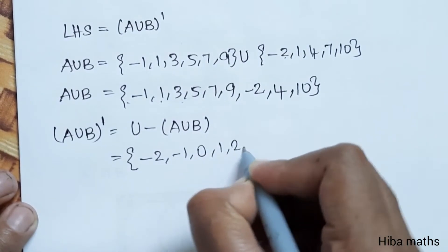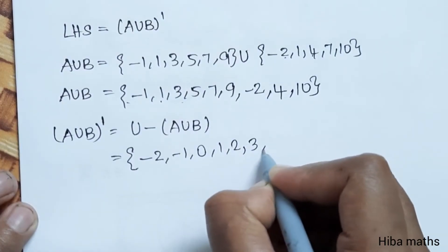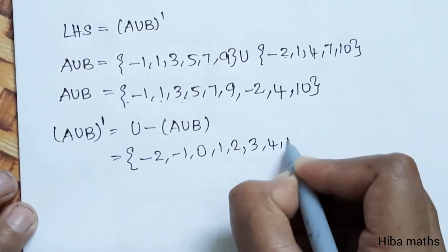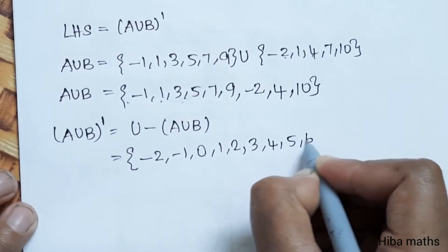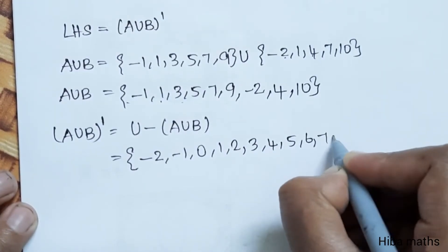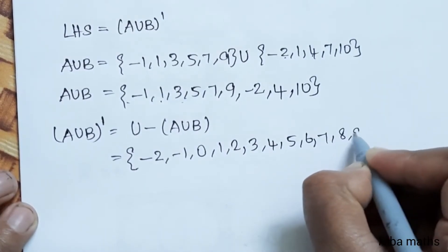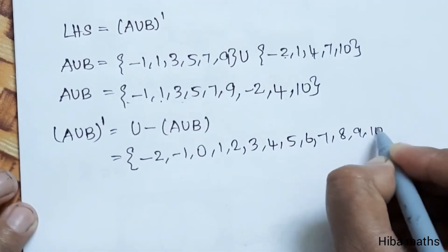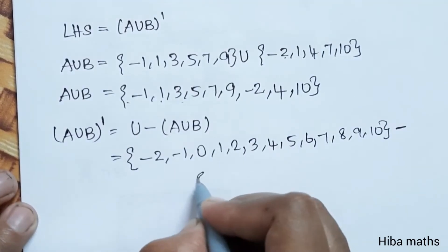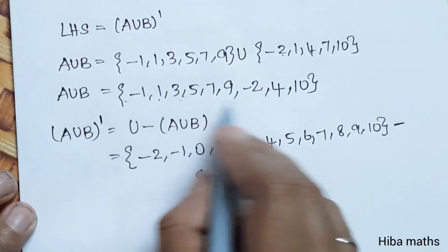A union B is equal to {-2, -1, 1, 2, 3, 4, 5, 6, 7, 8, 9, 10}. The complement is found by subtracting from U = {-2, -1, 0, 1, 2, 3, 4, 5, 6, 7, 8, 9, 10}.